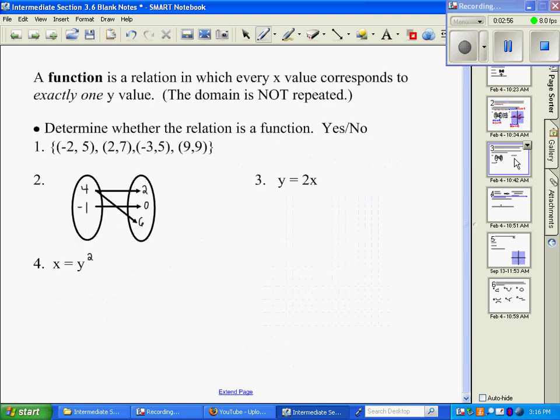And now we're going to talk about a function. A function is a special relation in which every X value corresponds to exactly one Y value. If that's somewhat confusing, the main thing you need to remember is that the domain, which is your X values, cannot be repeated. So in the next ones, we're going to look at each type of relation and determine whether it's a function. And we'll say yes, it's a function, or no, it is not.